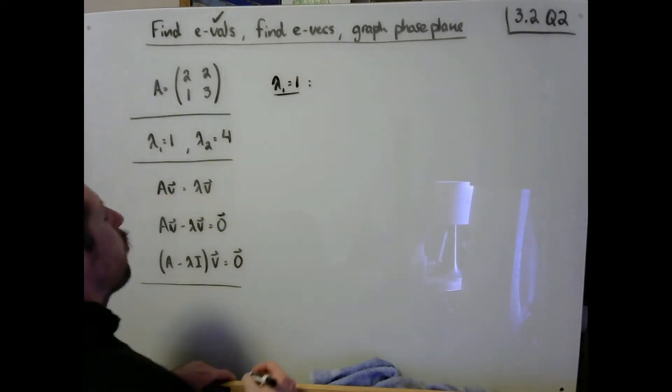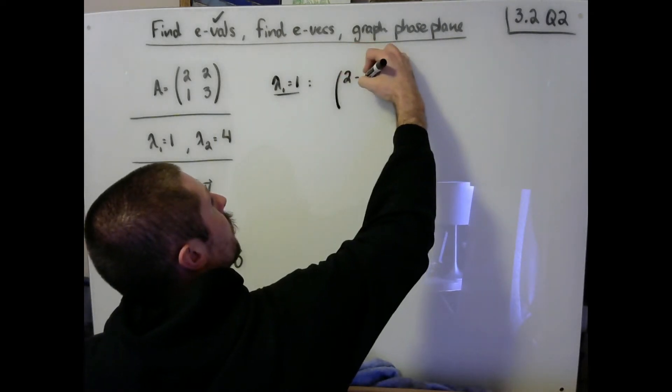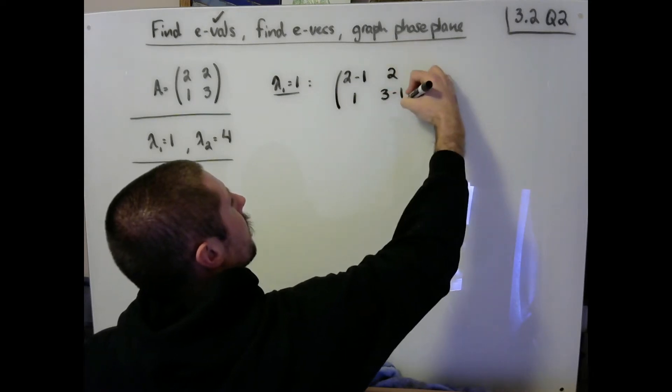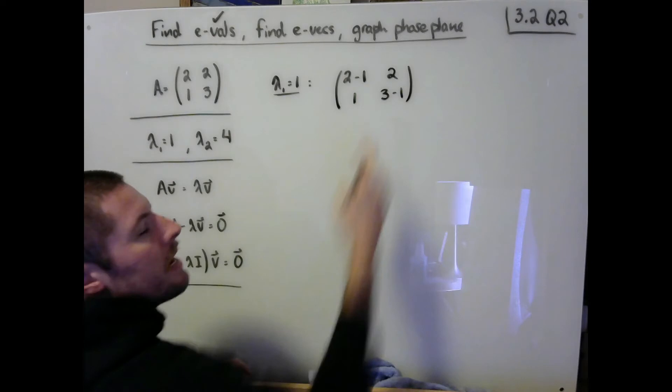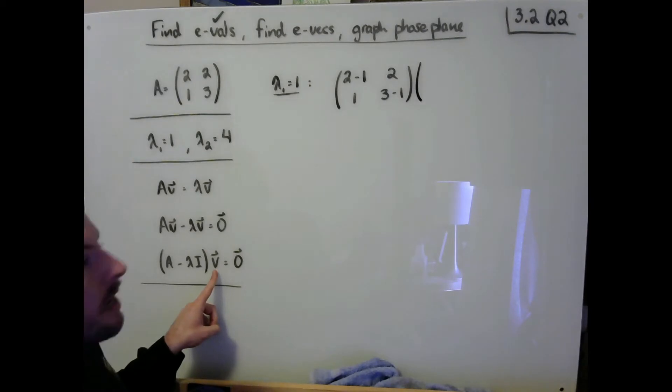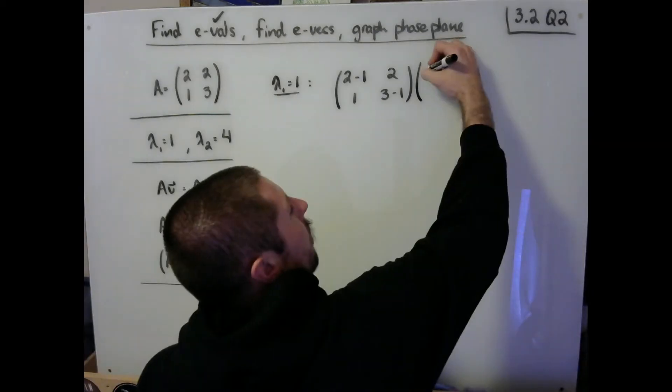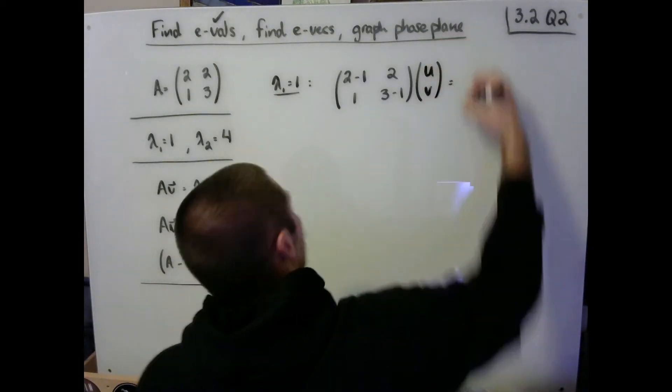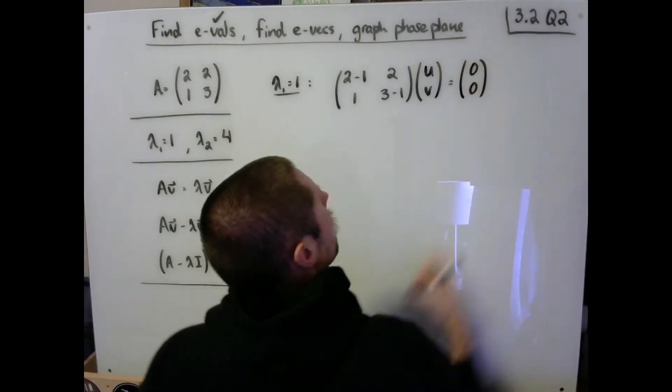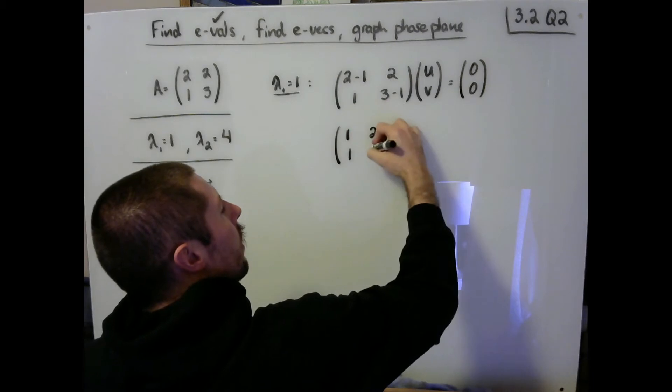In the case where our lambda is 1, we can build our A minus lambda I matrix as 2 minus 1, 2, 1, 3 minus 1. Notice that we are subtracting off lambda on the main diagonal. This should be multiplied by some unknown vector right here. Typically, I use different letters here, so I'll write this as u, v. And we know that we are interested in this being equal to the zero vector over here. With a little bit of simplification, I can see that we have 1, 2, 1, 2.